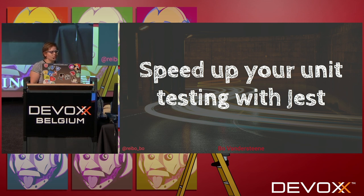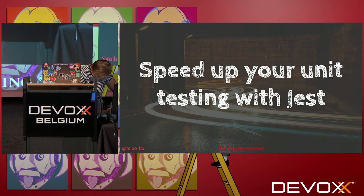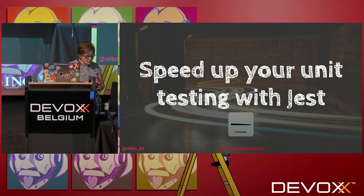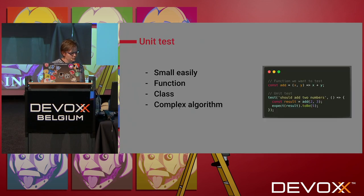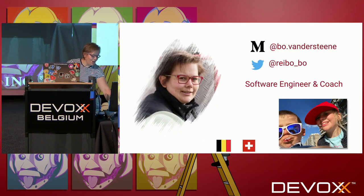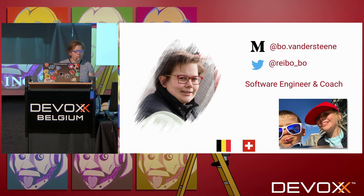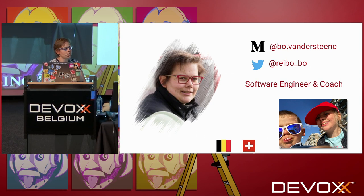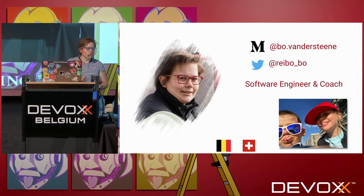Today I will talk about Jest and how we can speed up our unit testing work with Jest. I'm Bo van der Steenen, from Belgium but currently living in Switzerland. I work as a software engineer and a coach. Currently I work on a product that transforms 2D images into 3D images, provided in the cloud for inspectors. I also write blogs on Medium and sometimes tweet.